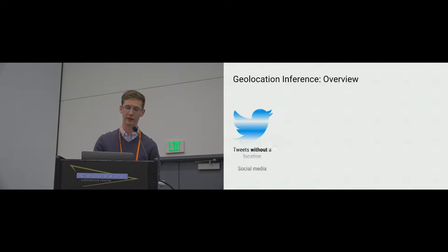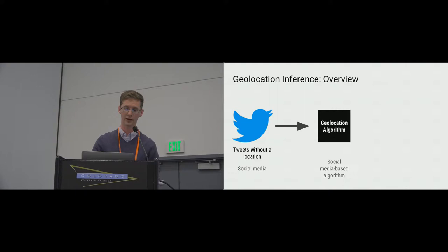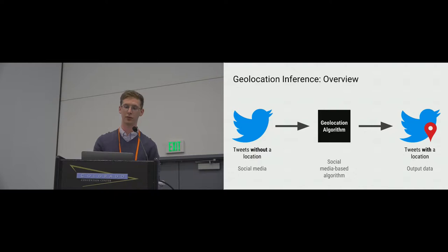Geolocation algorithms have been designed for this task. They take tweets whose locations aren't known — like Brent's tweet, because he's privacy conscious — and they make connections between them and other tweets or Twitter users they've seen whose location is known. Then they spit out the tweets having predicted where they're from. In reality, only some of these input tweets are actually correctly located.